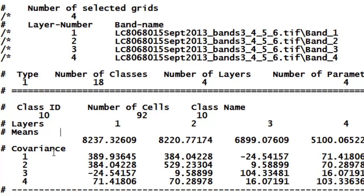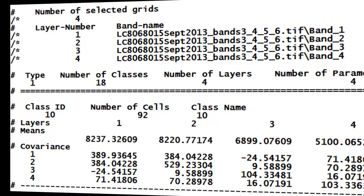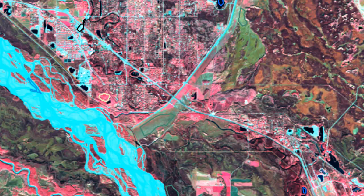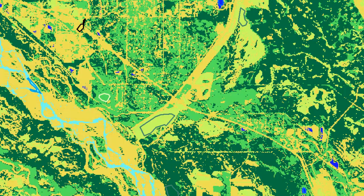Once we have the spectral statistics inside each training polygon, we use the maximum likelihood classifier to predict for every pixel which training polygon it most likely came from — in other words, which training polygon's spectral statistics the pixel values are most similar to. The result is a classified image where each pixel is assigned the training polygon class it is most likely to belong to.